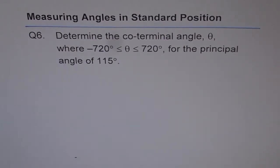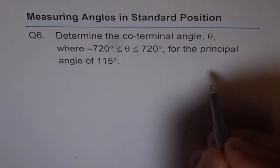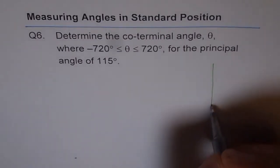I hope you remember what a co-terminal angle is. We get co-terminal angles by adding and subtracting multiples of 360 degrees from the angle. That's how we get it, and let me show you how it looks.